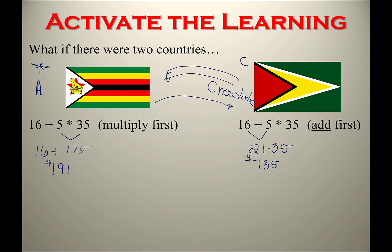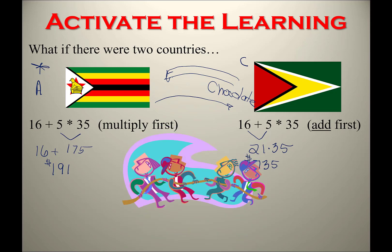Country A says their accountants got $191 and they're only paying that. They argue back and forth, and eventually war might break out — two countries destroying each other over a chocolate bill. It's a realistic situation: if you calculate a bill one way and the other party calculates it differently and gets another total, who's right and who's wrong? So in math we have a set of rules — the order of operations — so we all get the same results.